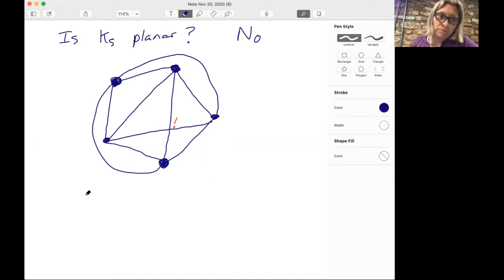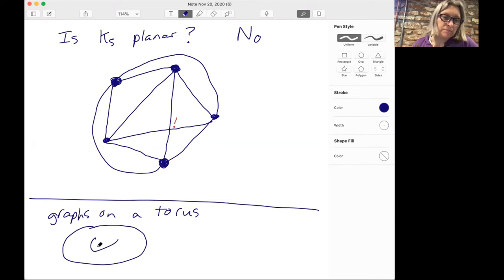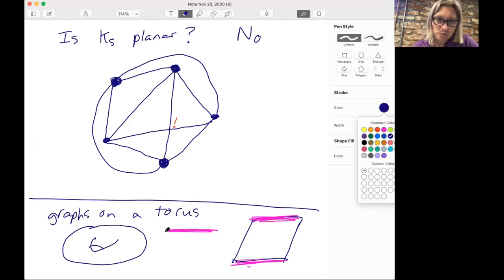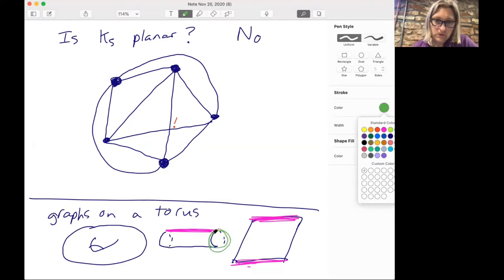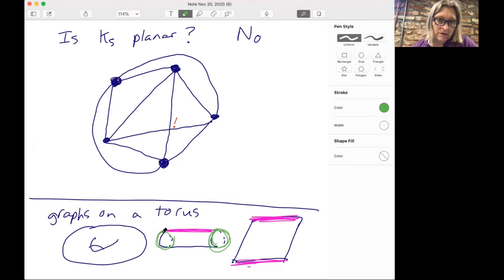Now, here's one thing that's kind of cool. And this is not about planar graphs. It's a more advanced topic called graphs on a torus. What a torus looks like is it looks like the surface of a doughnut. One way to make a torus is to take a piece of paper and then glue the top edge to the bottom edge.